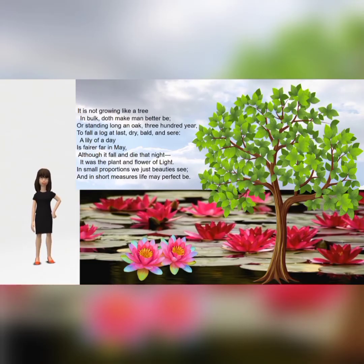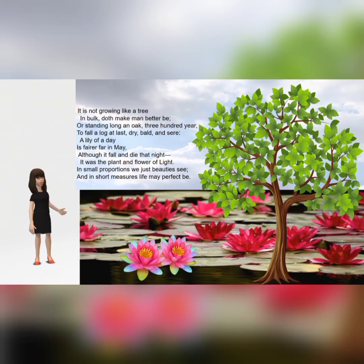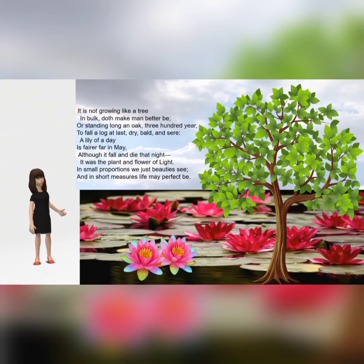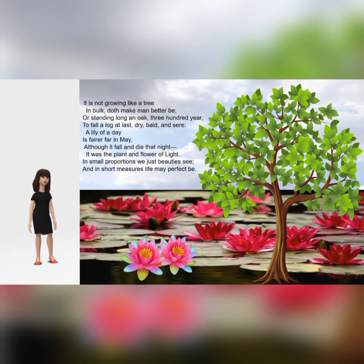It's not growing like a tree in bulk doth make men better be, or is standing long an oak three hundred year to fall a log at last, dry, piled and sere. A lily of a day is fairer far in May, although it fall and die that night — it was the plant and flower of light. In small proportion we just beauty see, and in short measures life may perfect be.